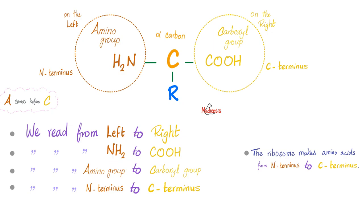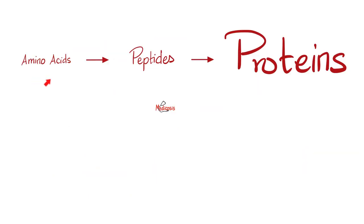Why do we care? Because this is the order of the amino acid coming out of the ribosome on the rough endoplasmic reticulum. The ribosome makes the N-terminus first before the C-terminus. That's why we care. Here are amino acids — they become peptides, and then they become proteins. These are the macromolecules; these are the micromolecules. Polymers. Monomers.